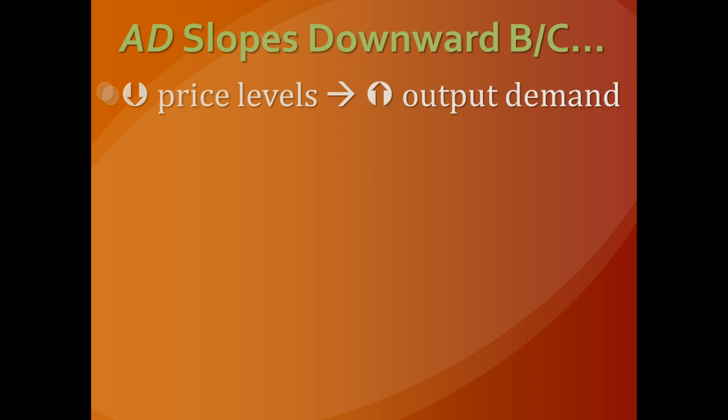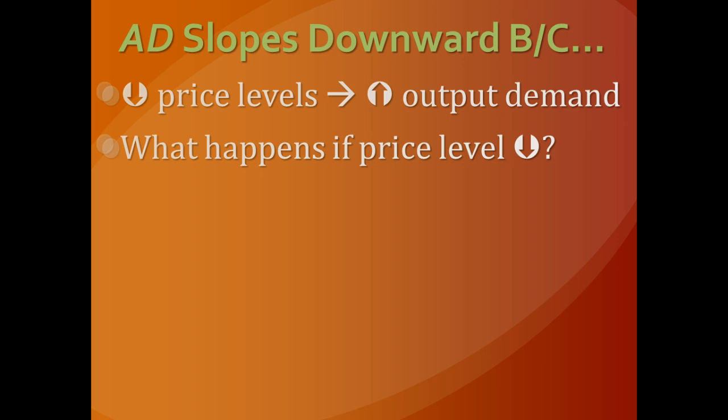There are several reasons why the aggregate demand curve slopes downward. Basically, as price levels drop, the quantity demanded by the overall economy rises. One reason is what we call the wealth effect — lower prices make you feel relatively wealthier, your money has more purchasing power, and so you're able to consume more goods.